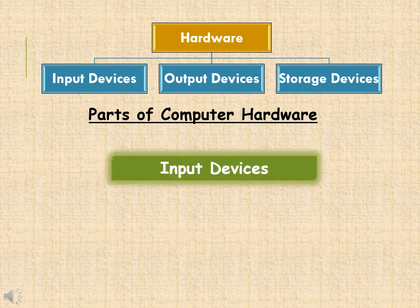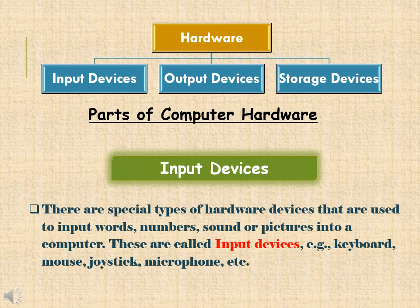Number 1: Input Devices. These are special types of hardware devices that are used to input words, numbers, sounds, and pictures into a computer system. Examples include keyboard, mouse, joystick, microphone, etc. They are known as input devices.